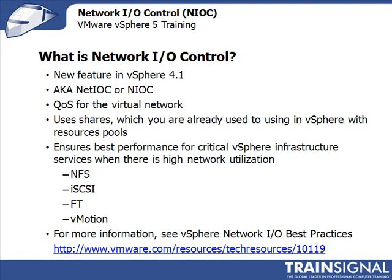Perhaps you want to split out network traffic if it's actually causing too many problems. But for the most part, the quality of service provided in NIOC is going to be exactly what virtual networks need to ensure that your most critical traffic gets the priority it deserves. There's more information available on vSphere network IO best practices at that URL. So now let's talk about what's new in vSphere 5 Network I.O. Control.